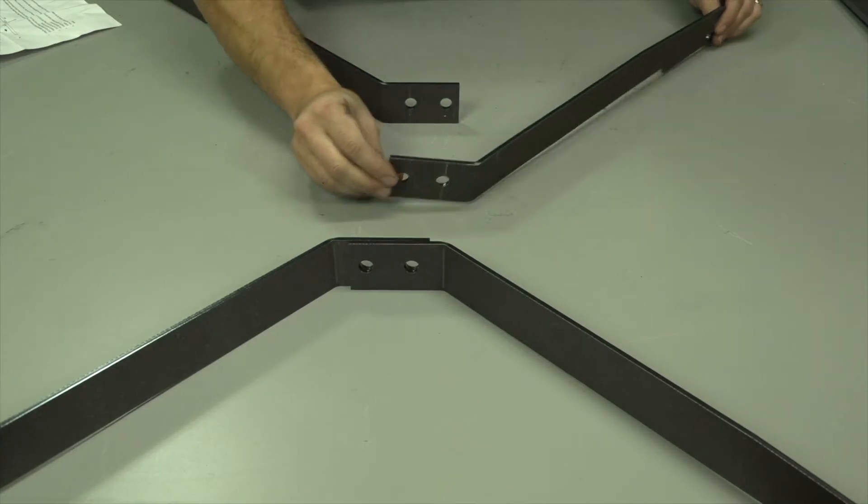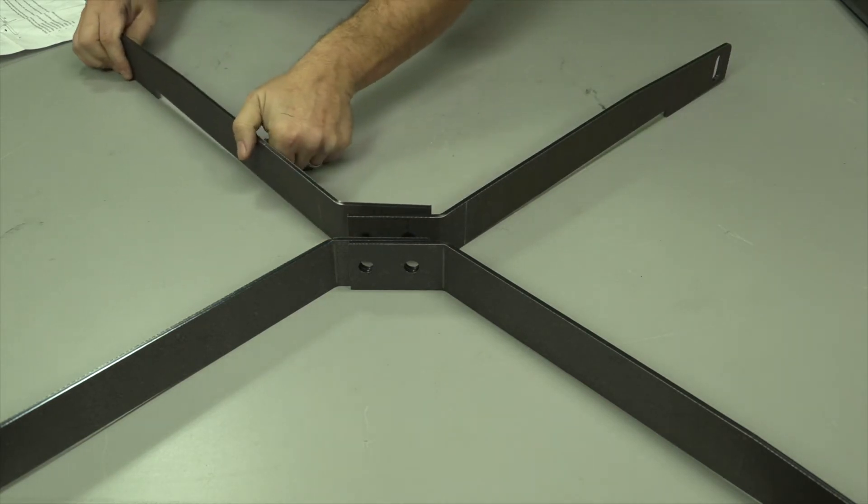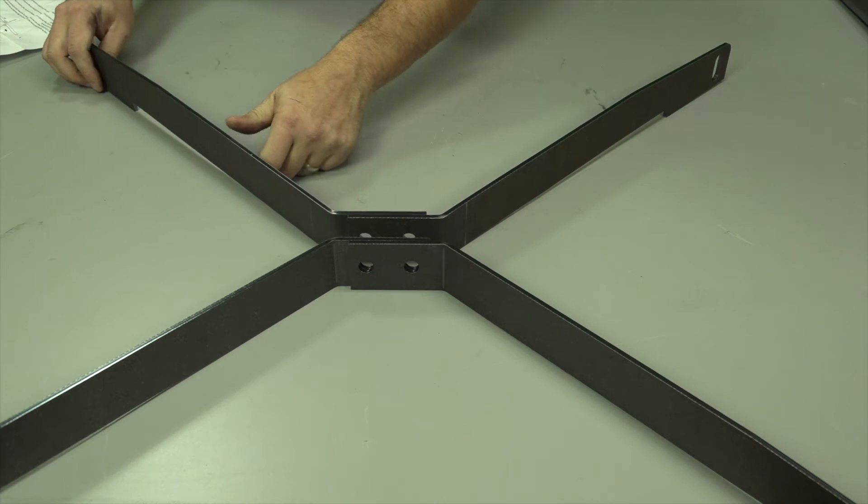Lay out the legs as shown in the X configuration, making sure that the flat pad portion of the legs is facing downward. One of each style of legs will be used on the front and rear pair.